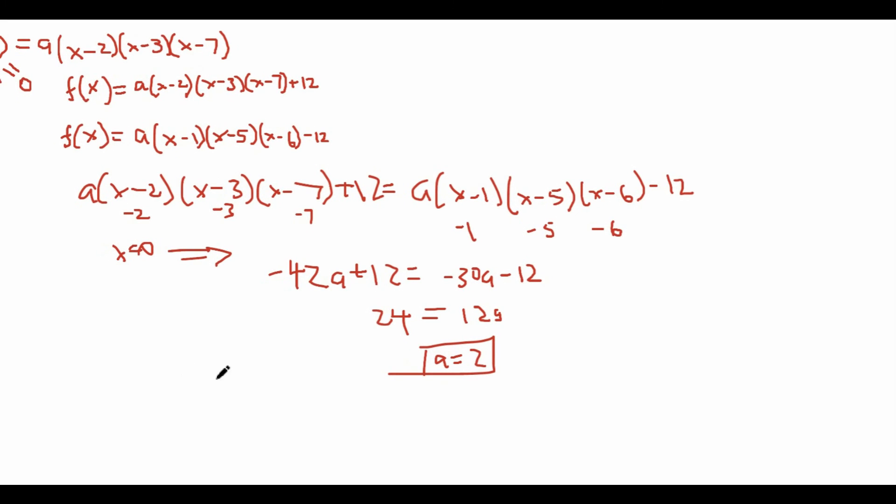So we can plug this back into our original equation here. We can pick any of these, it doesn't really matter, so I'll just pick this one. We get f(x) = 2(x - 1)(x - 5)(x - 6) - 12.